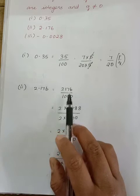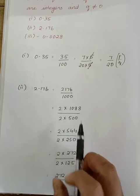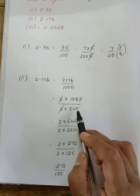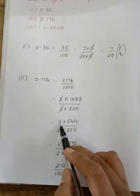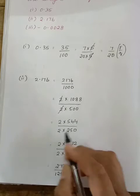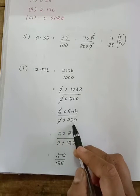So 2176 and 1000 can be written as 2 into 1088, 2 into 500. 2 and 2 get cancelled. 1088 divided by 500. 1088 can be written as 2 into 544, 2 into 250. 2 and 2 get cancelled. Remaining we have 544 divided by 250.